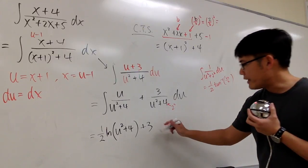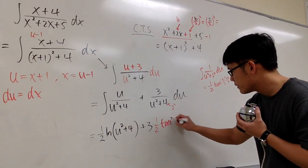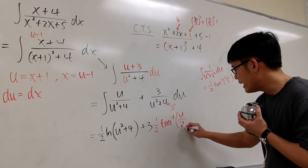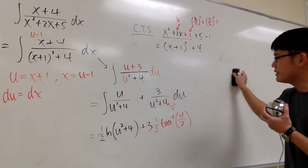But anyways, this is going to be 1 half, so multiply by 1 half, inverse tangent u over a, the a value, which is 2 right here. And that's it.